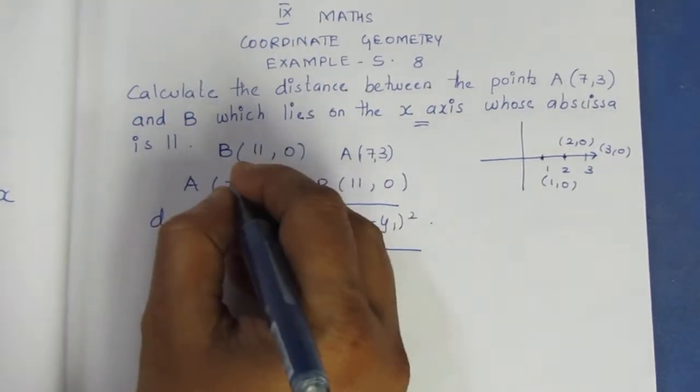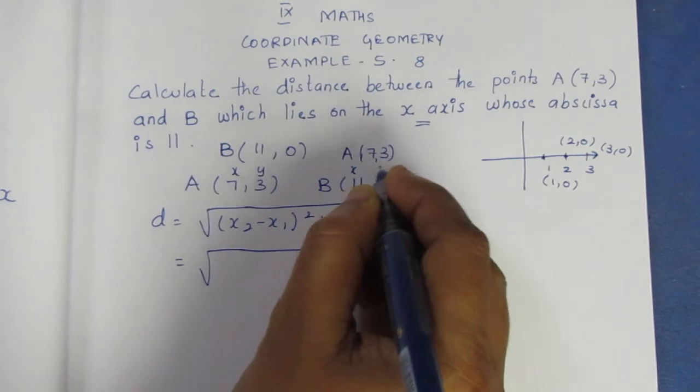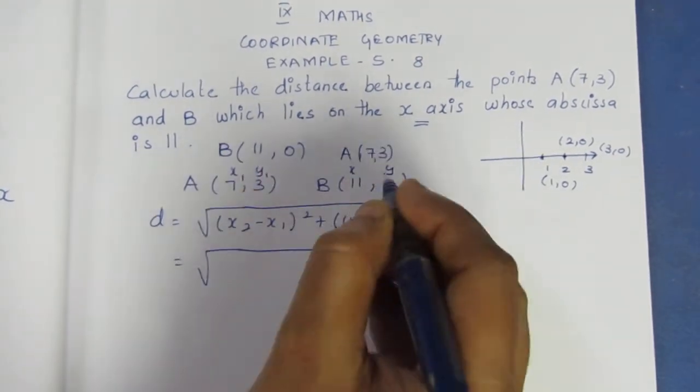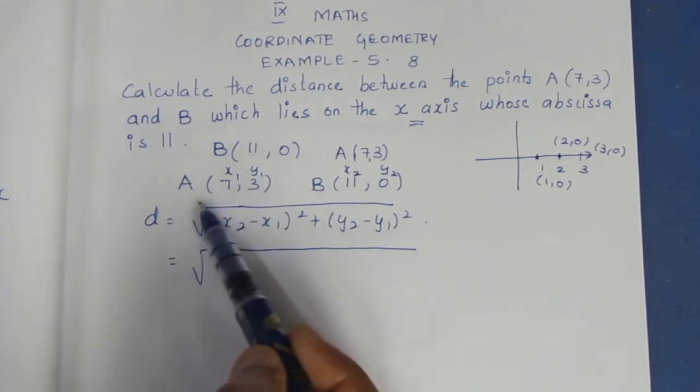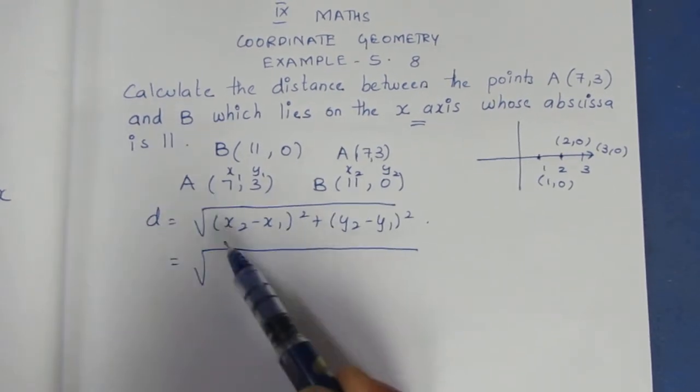Now, x1, y1, x2, y2. x2 minus x1 whole square. First value is 11. It is easy, 11 minus second one is 7.